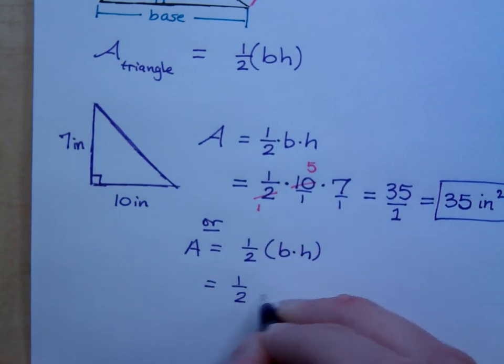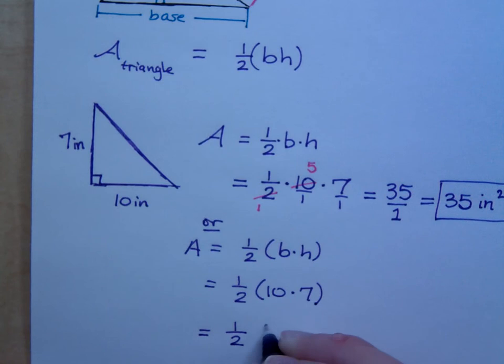So, if you say 1 half times the base, which is 10, times the height, which is 7, then you end up with half of 70, and what's half of 70? That still gives you 35, so we're going to have 35 square inches.